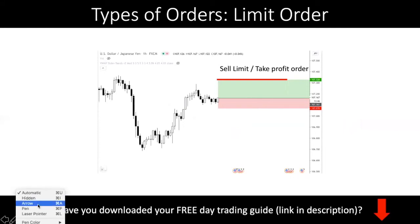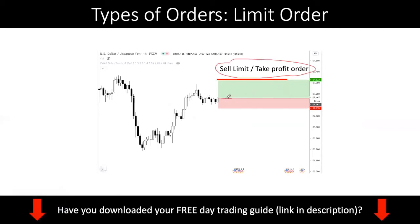What I mentioned about the limit order also being the take profit order: let's say you entered a long position here with a stop loss below and take profit above. You're buying here and hoping to exit higher. If price hits your take profit level, technically it's a sell limit because you are trying to sell back the currency at a higher price. Hopefully that makes sense. If anything isn't clear, just leave a comment and I'll do my best to address it.